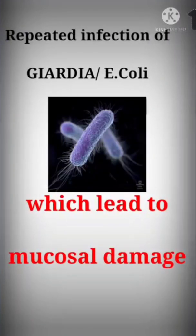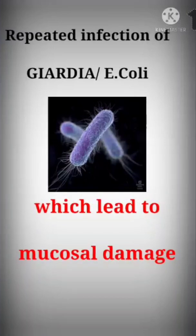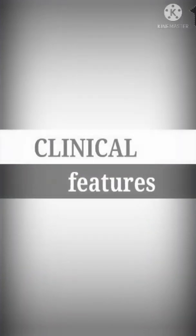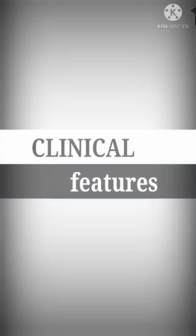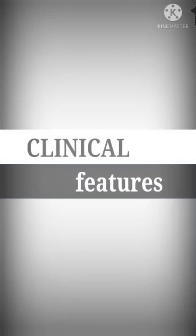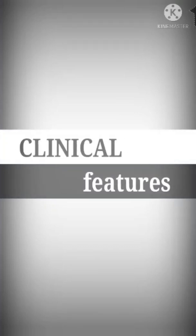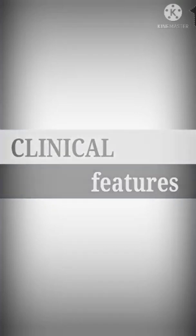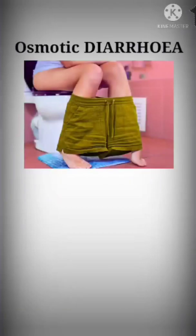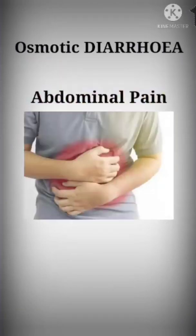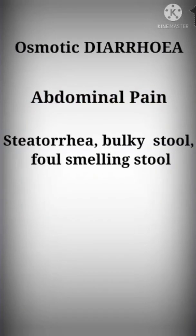which leads to mucosal damage. Let's see the various clinical features of tropical sprue. These clinical features are mainly due to malabsorption. The first clinical feature is osmotic diarrhea, then abdominal pain, and then the stool becomes bulky and foul-smelling.